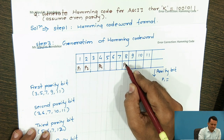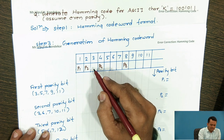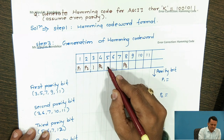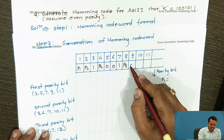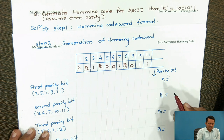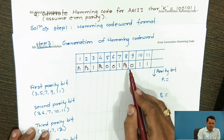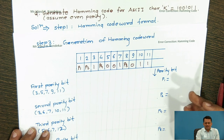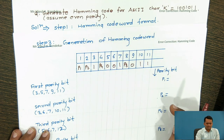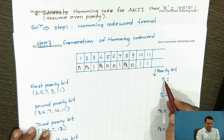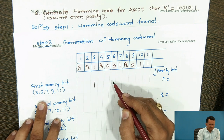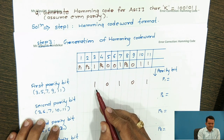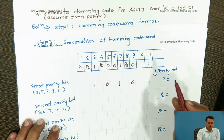The data locations are filled with the bits of ASCII character 'K' (1001011), so positions 3, 5, 6, 7, 9, 10, 11 are filled as 1, 0, 0, 1, 0, 1, 1 respectively. We still need to find the values of P1, P2, P4, and P8. We assume even parity. For P1, we check bit positions 1, 3, 5, 7, 9, and 11 — these bits currently form odd parity, so to make it even we set P1 = 1.